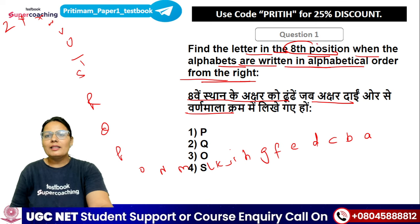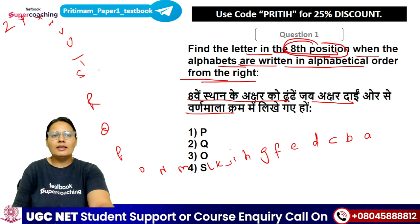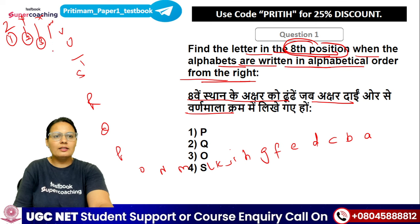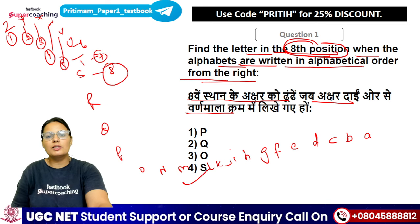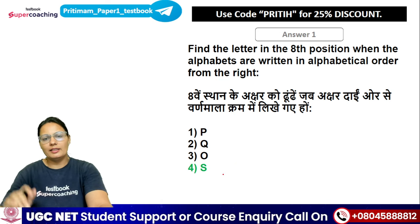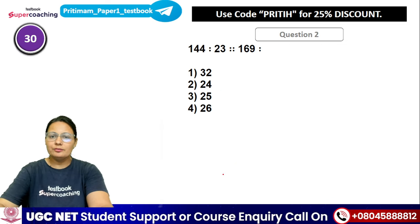Ab batao — 8th position kaise hai isi order mein. First position Z, second, third, fourth, fifth, sixth, seventh, eighth. तो 8th position किसकी बनी? S letter की बनती है। Correct है?